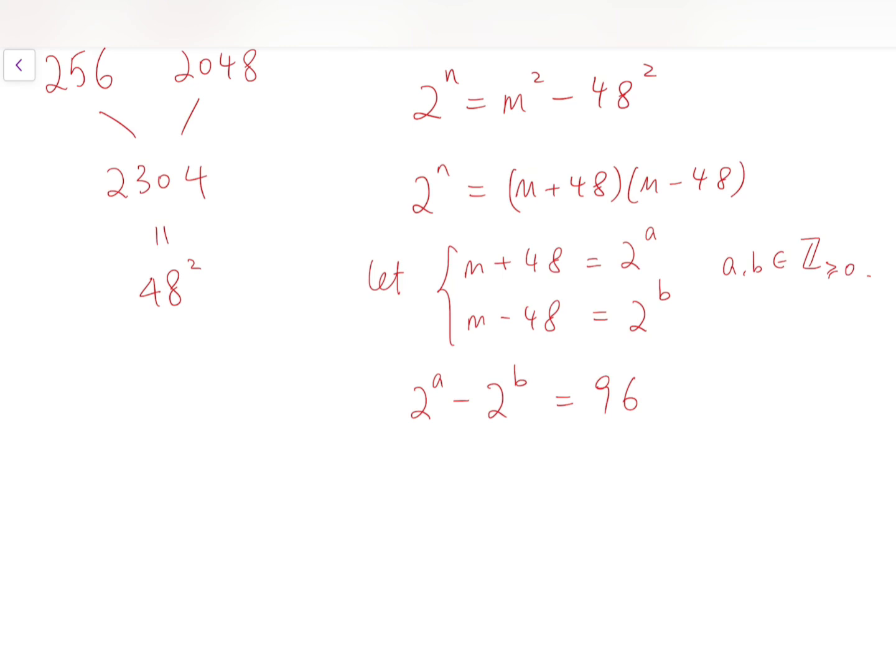So we can take out 2^b as a common factor on the left-hand side, and we have 2^b times (2^(a-b) - 1). The product equals 96.